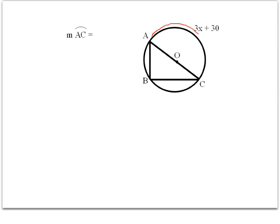The next problem asks us to find the measure of arc AC. Remember, the measure is the angle measure of that arc. We just said this is the diameter of the circle, which creates a semicircle, and a semicircle is 180 degrees. We can also confirm this because angle ABC is an inscribed angle of 90 degrees, and the measure of an inscribed angle is always half the intercepted arc — so the intercepted arc is 180 degrees.